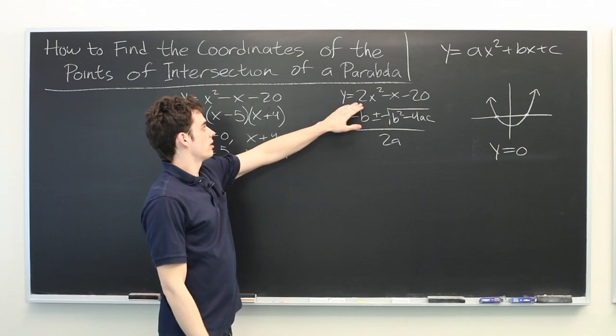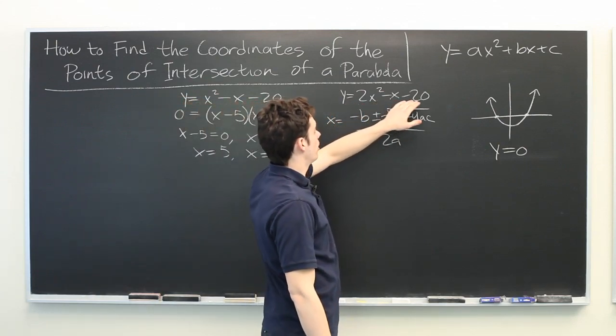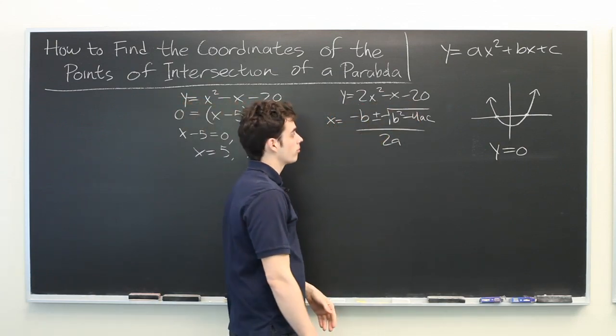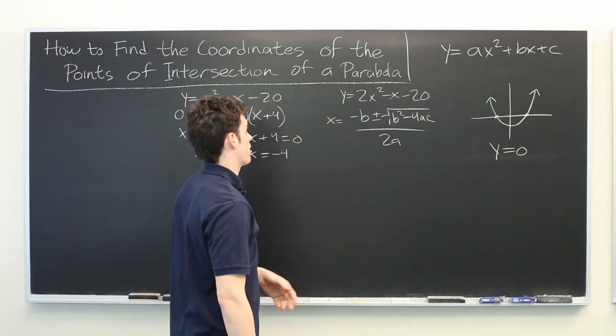So in this case a is 2, b is negative 1, c is negative 20. So let's take those values and start plugging them in.